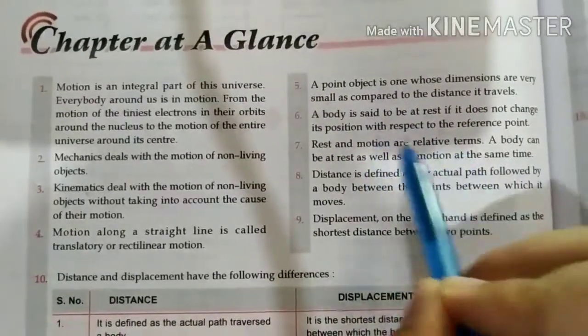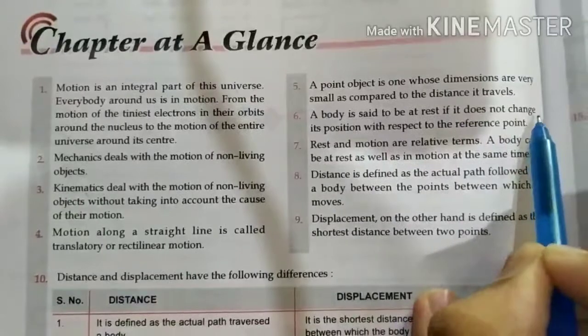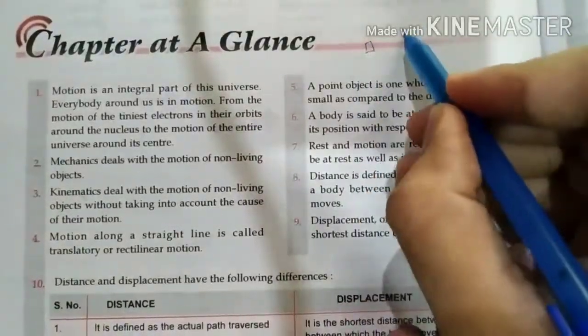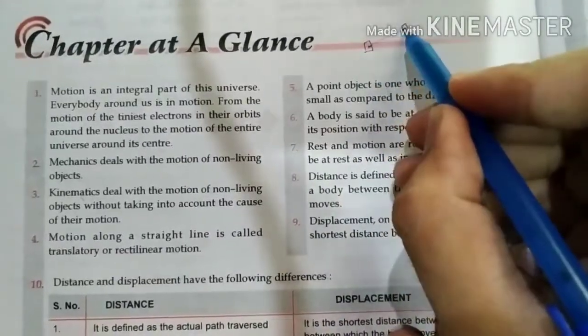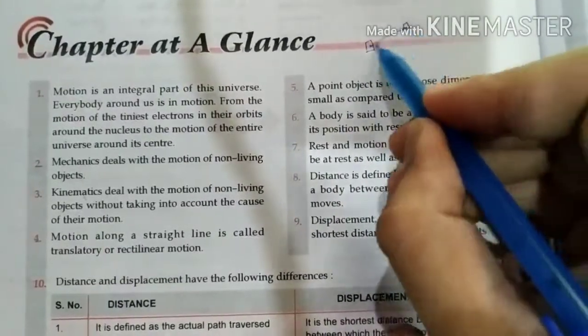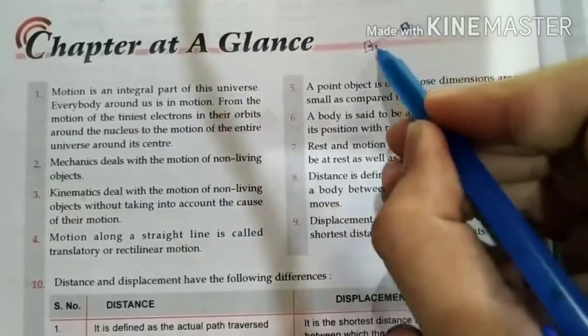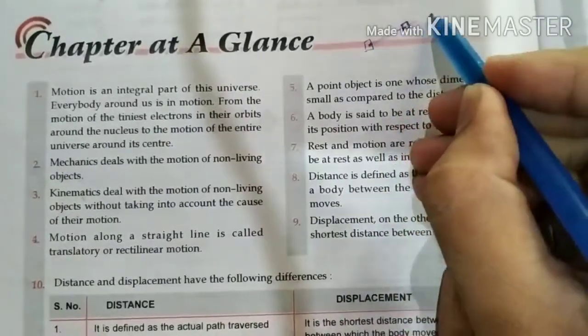Rest and motion are relative. If you think here is some object, here is some other object. With respect to this, if this is not the distance change, then this object will be rest. When will it happen in motion? When we see this will change our distance.